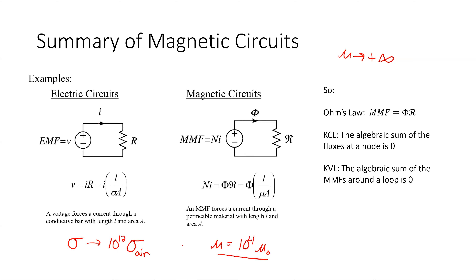KCL is the sum of the fluxes at a node is zero. KVL is the sum of the MMFs around the loop. And reluctance is just like resistance in terms of its formula — you've got the formula there for how you would calculate it.